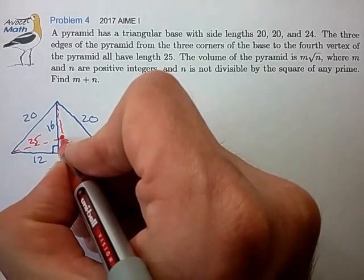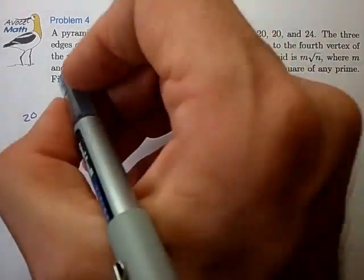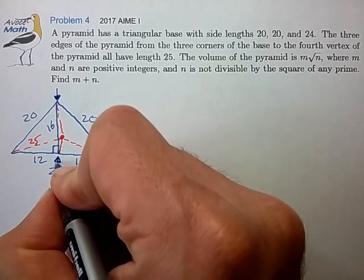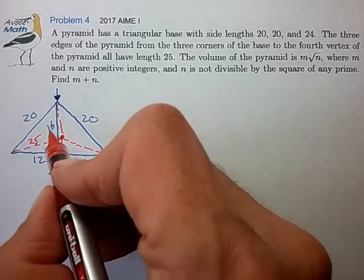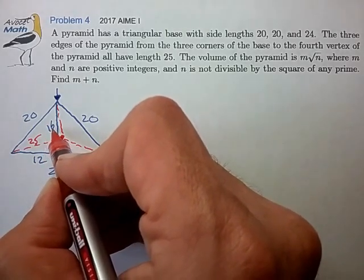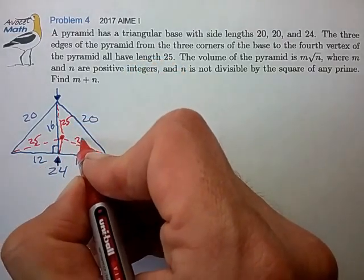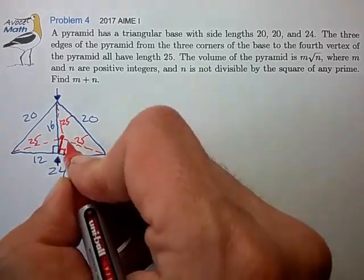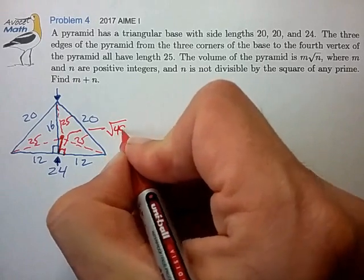So it looks like the cross section that runs down through this line and perpendicular to the base triangle is the cross section that we want to focus on. And this cross section has one length of 16, one length of 25. We can do a little Pythagoras here to find that this length is root 481.